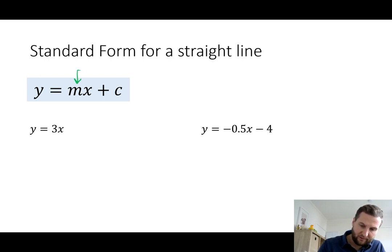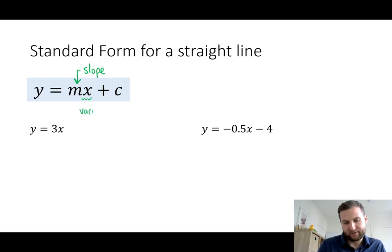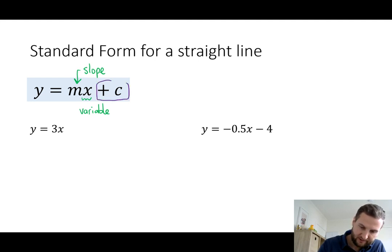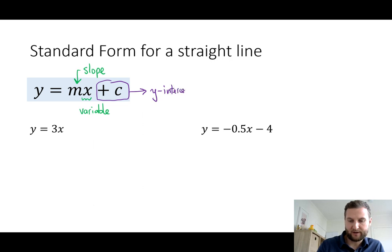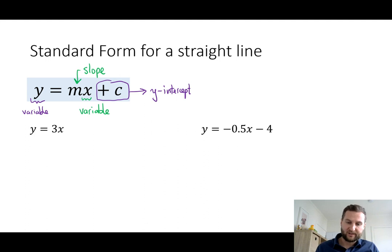The m here represents slope and we saw this in the last session. It is always right beside the x, and of course this is the variable of interest. The c down the back end, including the plus sign when written like this, represents the y-intercept. This is where the function crosses the y-axis. Then we have y — this is my function definition — so y equals f at x on the left hand side, and this is also my other variable. This is called standard form.